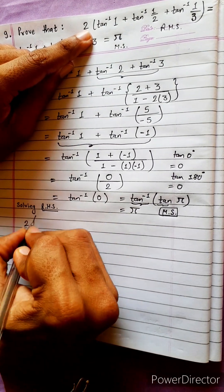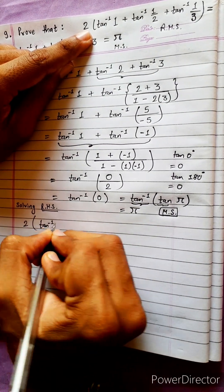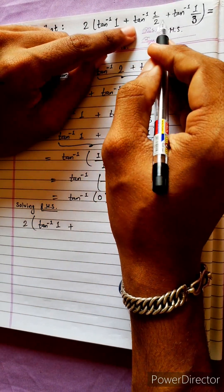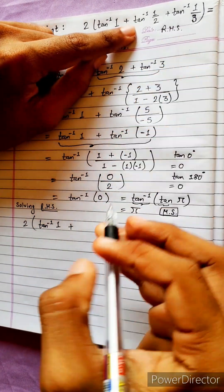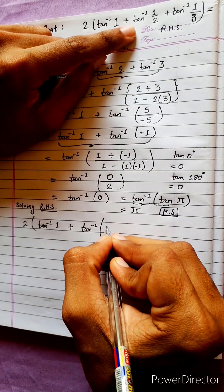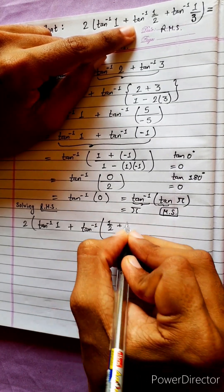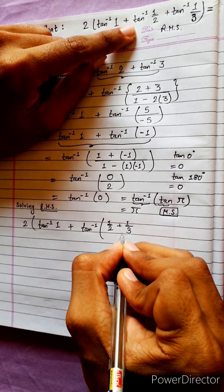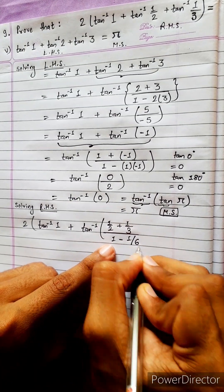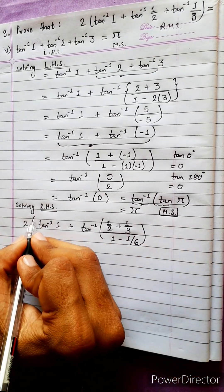Let's solve the right hand side directly. Using the formula tan⁻¹(a) + tan⁻¹(b) = tan⁻¹((a+b)/(1−ab)). Starting with 2·tan⁻¹(1) and applying the formula with the given values.